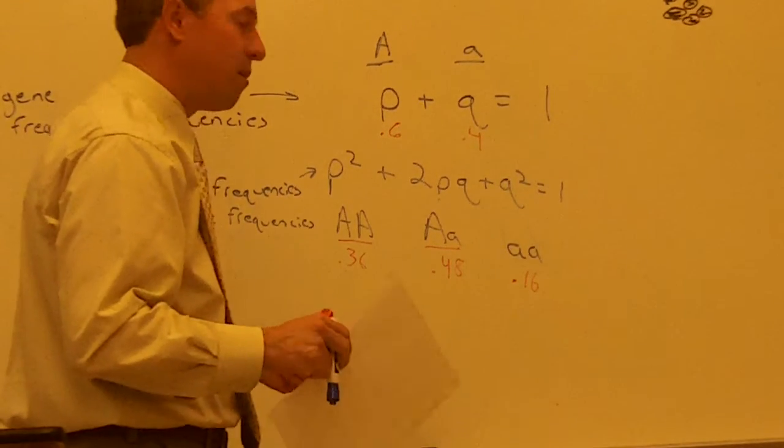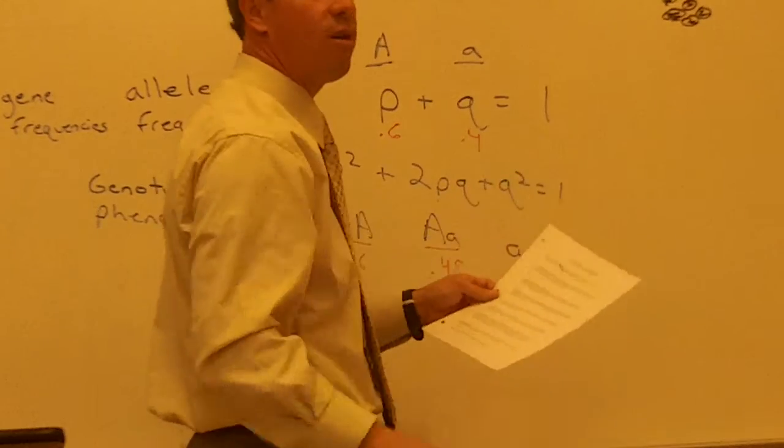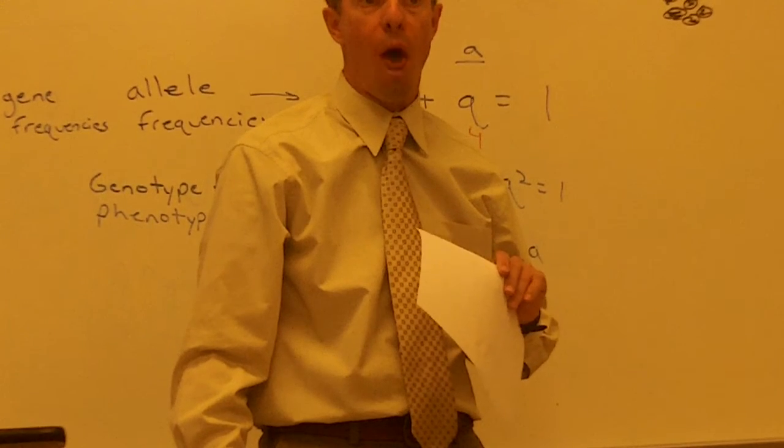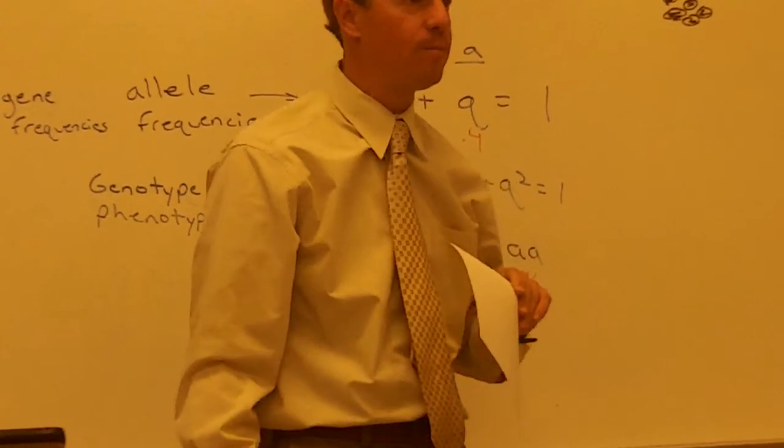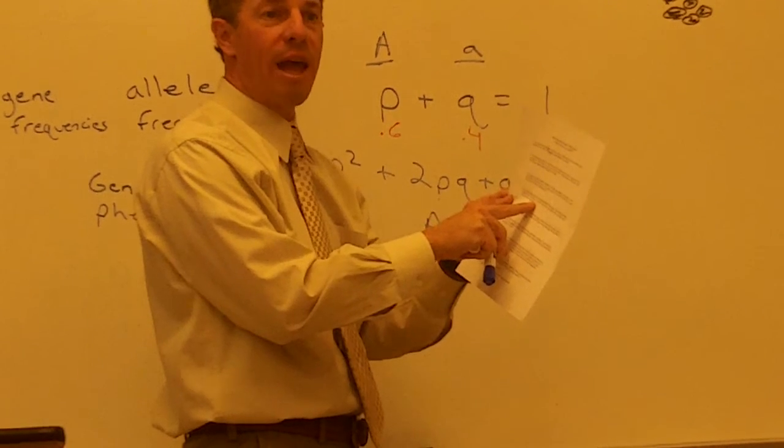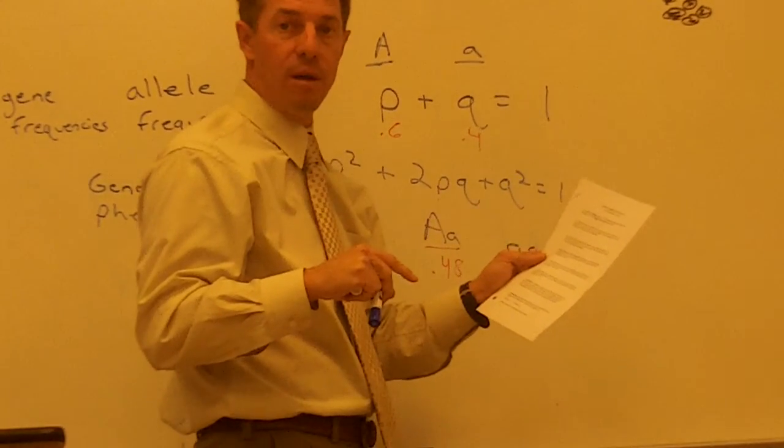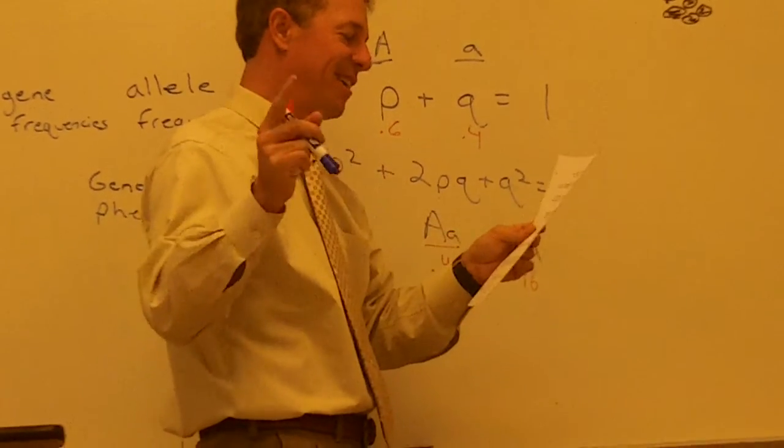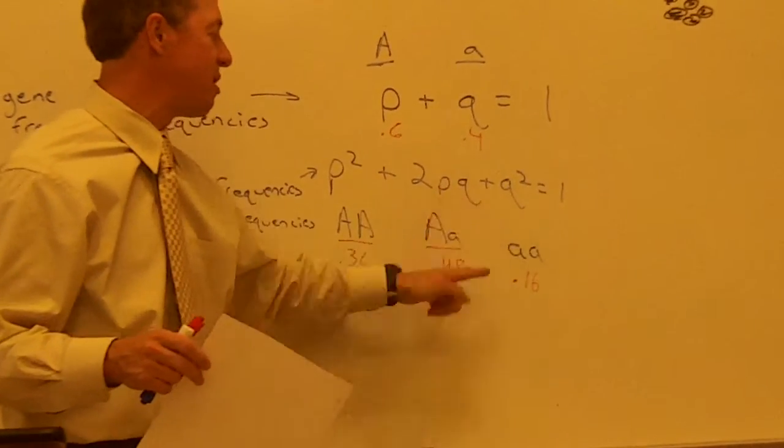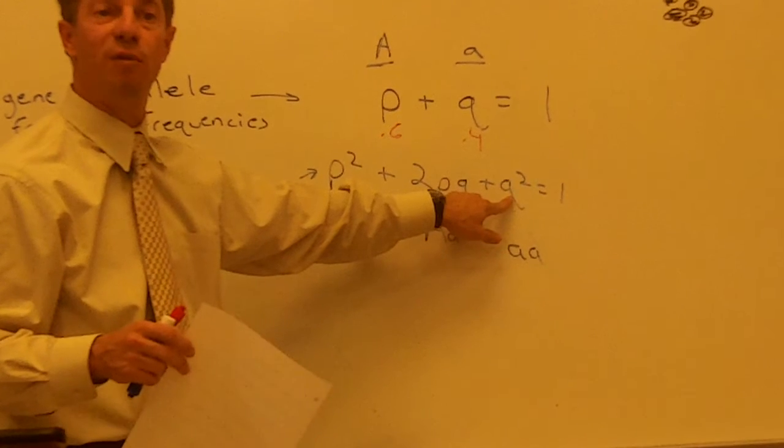In the United States, about 25% of the population cannot roll their tongues. Can you roll it? Some people can, and some people can't. It's a gene. Some people can do it, some people can't. Listen. 25% can't roll their tongue. That's recessive. So what is that talking about? It is talking about q squared. So q squared is .25. And then? So what's q? .5.